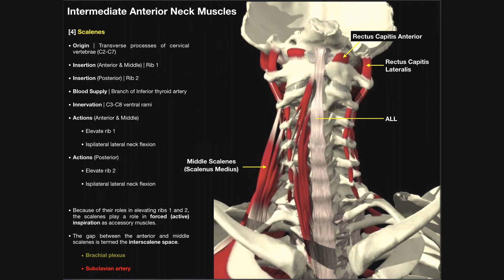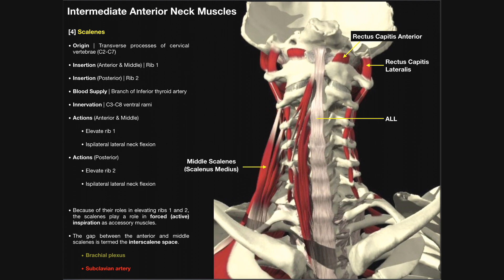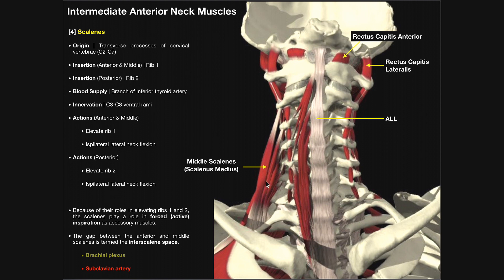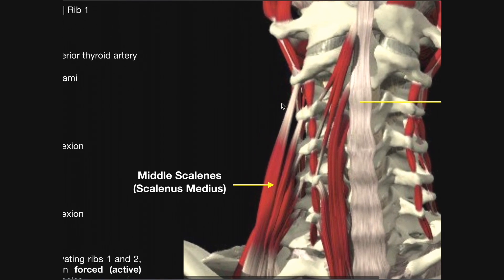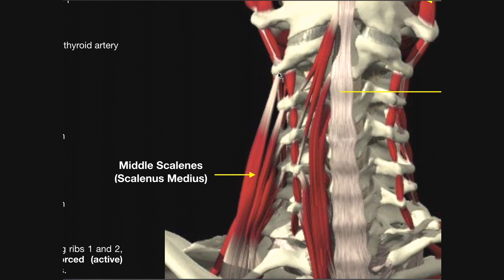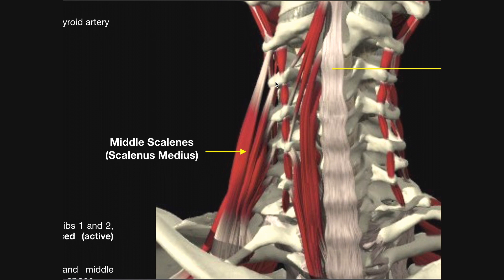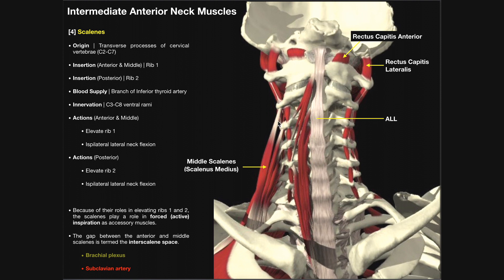The middle scalenes are anterior to the posterior scalenes. They also originate on transverse processes, but starting a bit farther up. Their origin begins on the transverse process of C2 (the axis), with additional origins at C3, C4, C5, and C6. The fibers descend downward, and the middle scalenes insert on the first rib.